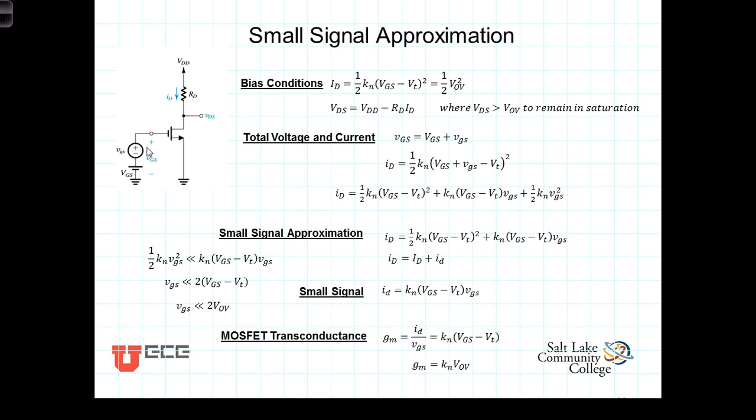Under saturation conditions with the voltage source, the biasing voltage source and the signal, we have a number of different components. At the input, we've got the DC biasing voltage and the signal of interest. In the drain, we have the total current, which consists of a biasing current, capital I capital D.